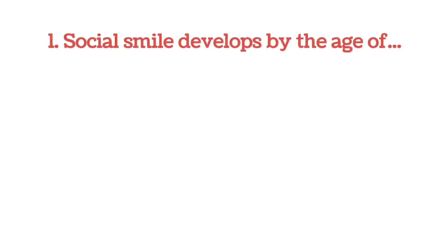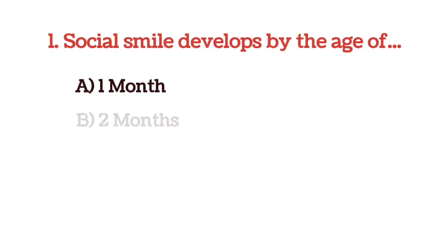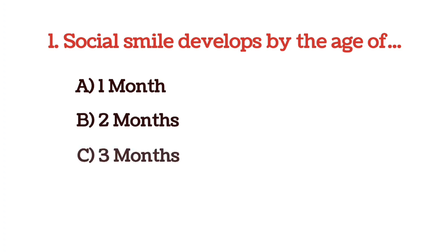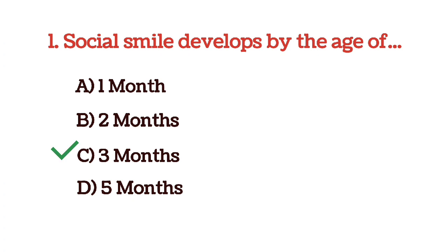The first question: social smile develops by the age of — options are 1 month, 2 months, 3 months, and 5 months. The correct answer is option C, 3 months.